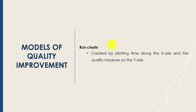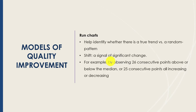On a run chart, the x-axis represents time — this might be days, hours, or months depending on what you are measuring — and the y-axis represents your quality metric. By creating these run charts, you can identify whether there is a true trend versus a random pattern or random variation. There are specific tests that can be applied to a run chart to help differentiate the two.